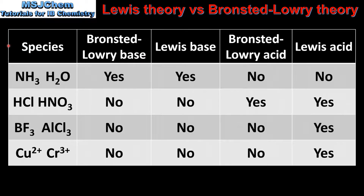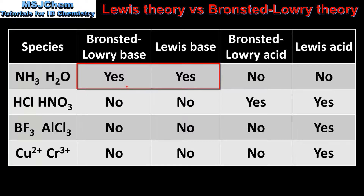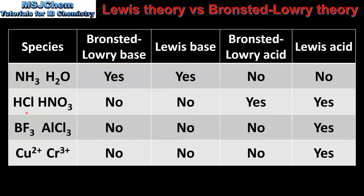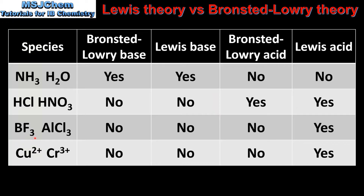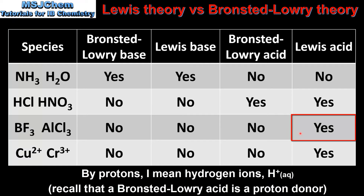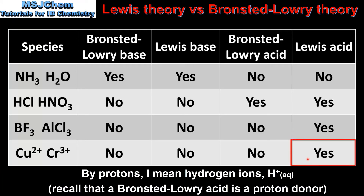To summarise: molecules with lone pairs of electrons, such as ammonia and water, can act as both Bronsted-Lowry bases and Lewis bases. Acids such as hydrochloric acid and nitric acid can act as both Bronsted-Lowry acids and Lewis acids. Electron deficient species such as boron trifluoride and aluminium chloride can only act as Lewis acids because they have no protons to donate. Similarly, metal cations such as copper 2+ and chromium 3+ have no protons to donate, therefore they cannot act as Bronsted-Lowry acids.